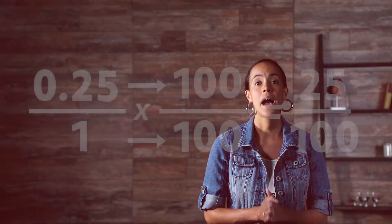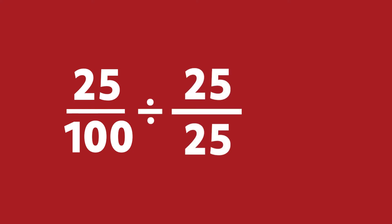Now you have to simplify the fraction. You do that by finding the highest number that divides the top and bottom numbers equally. In this case, the answer is 25. 25 is the highest number that equally divides both 25 and 100. Here's how the equation looks: 25 over 100 divided by 25 over 25 equals 1 over 4. And there you have it — the answer is 1 fourth.